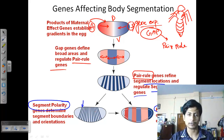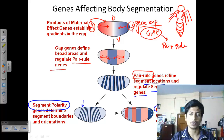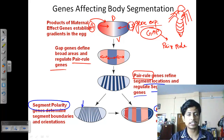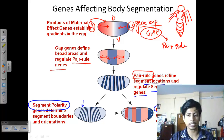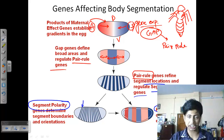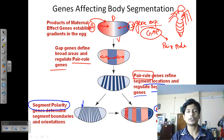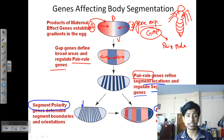The hierarchy begins with maternal effect genes controlling gap genes, gap genes controlling pair rule genes, pair rule genes controlling segment polarity genes, and segment polarity genes controlling homeotic genes. Both segment polarity and homeotic genes are controlled by pair rule genes and together bring about the changes in segmentation.